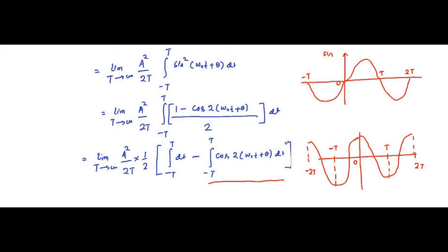Whenever we integrate a sine or cosine function over one complete cycle — whether from minus T to T or from 0 to 2T — that integration value will always be equal to zero. For example, from 0 to 2T: the area of the curve above the horizontal axis is positive, and the area below the horizontal axis is negative. They are of equal magnitude, so they cancel each other out and the net value is zero.